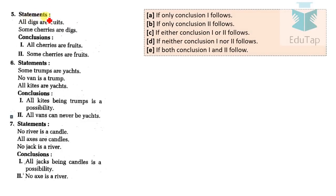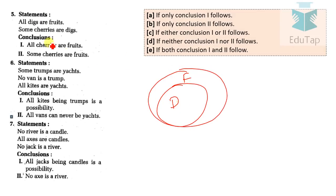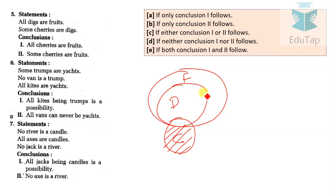Question 5: Statement 1 — all digs are fruits. Statement 2 — some cherries are digs. Conclusion 1 says all cherries are fruits, but part of the cherry circle falls outside fruit, so conclusion 1 does not follow. Conclusion 2 says some cherries are fruits, which is clearly valid. So the answer for question 5 is: only conclusion 2 follows.